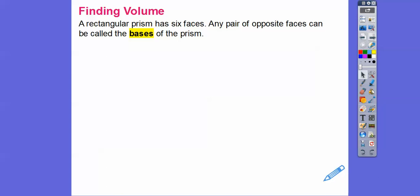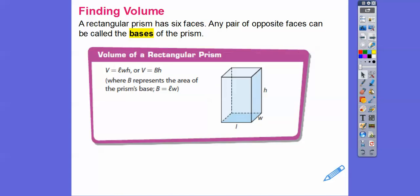So here we go. We've got a rectangular prism, has six faces. Any pair of opposite faces can be called the base of the prism. So if you have a rectangular prism, and that's the rest of this lesson right here, the volume is length times width times height, which is a groovy formula. Or you can do base times height, where base is length times width. So base is typically the bottom right here. So length times width. So the area of the base times the height. Same thing, same formula.